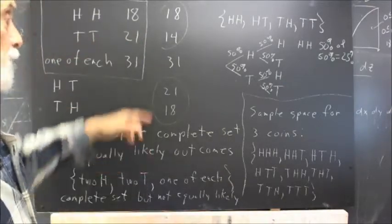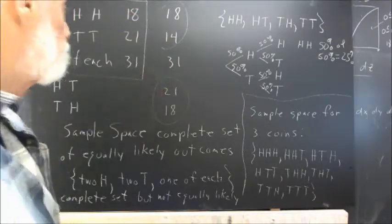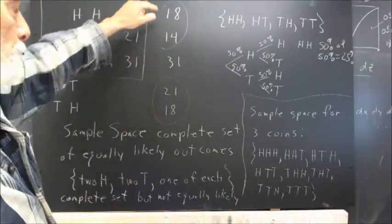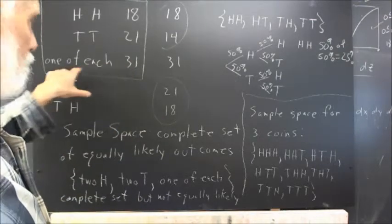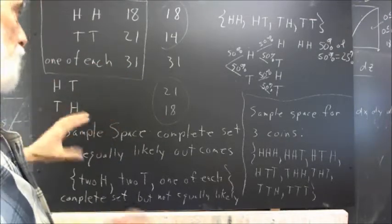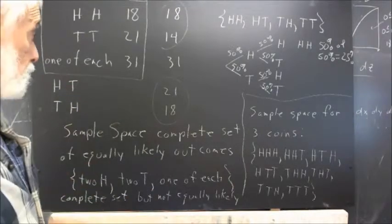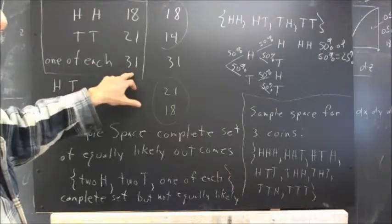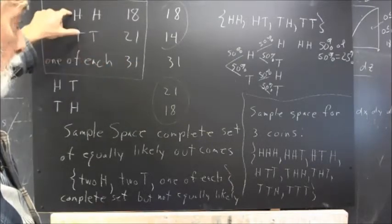And we observed that these outcomes appeared to be equally likely, or at least were plausibly equally likely. It's not entirely impossible that by random chance, by statistical fluctuation, the one of each could come out with a much higher result, even though it was as likely as either of the other two.